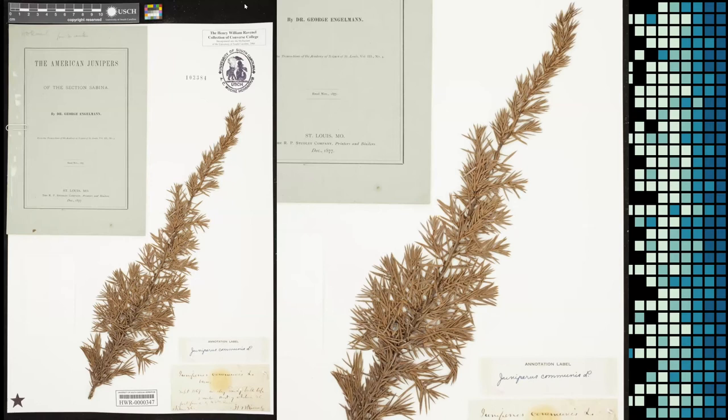One northern botanist named Thomas Meehan in Philadelphia, whom Ravenel was in touch with, sent him a loan of fifty dollars so he could start a nursery business — which didn't make it. Meehan told him he didn't consider it had to be repaid, which says something about the spirit between the north and south after the war.